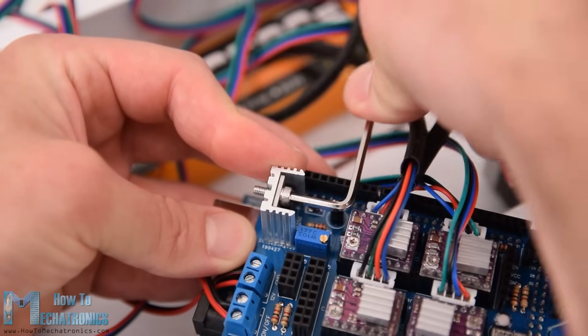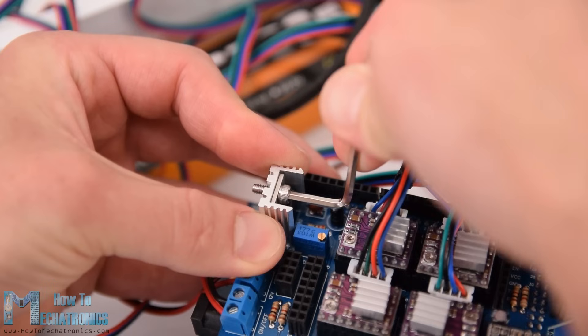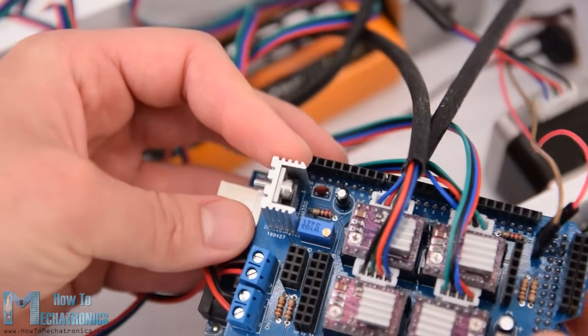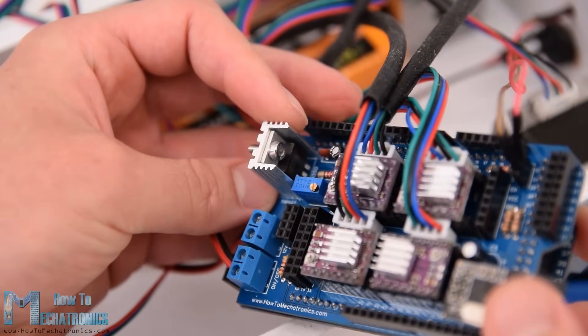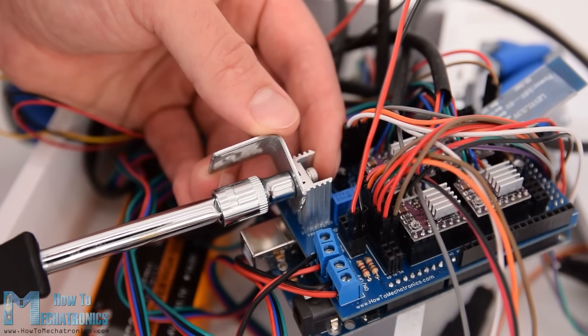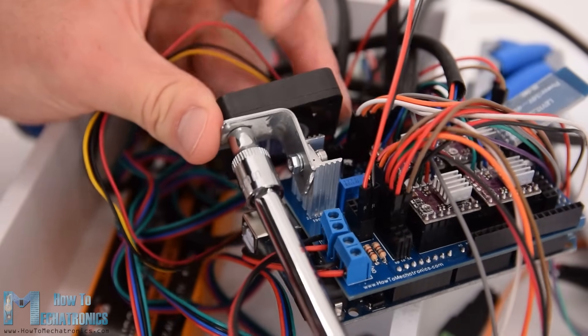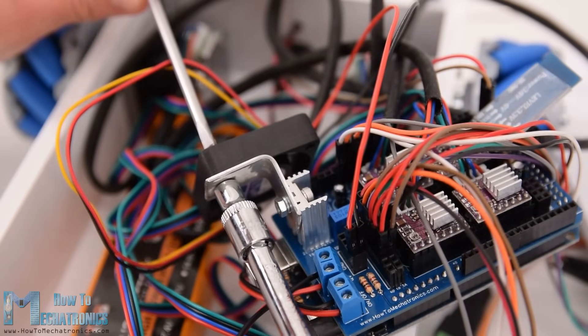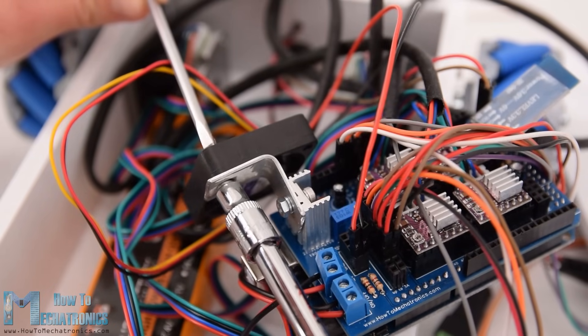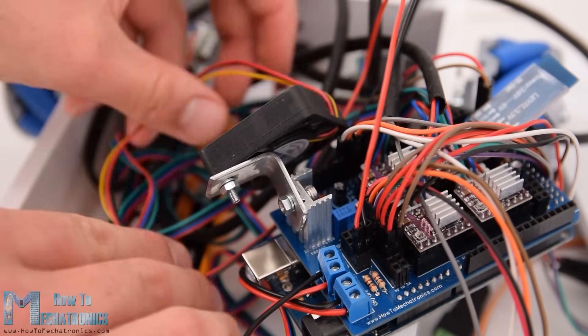The voltage regulator is the LM350 which can handle up to 3A of current. All 6 servos of the robot arm can draw from around 2A to 3A of current which means that it can handle them but that will cause the regulator to get very hot. Therefore I attached a heatsink to it as well as a small 12V DC fan to blow some air because the heatsink itself wasn't good enough to cool the regulator.